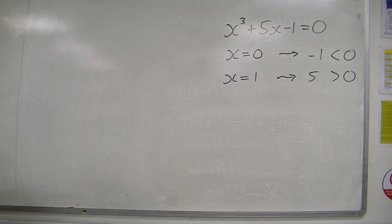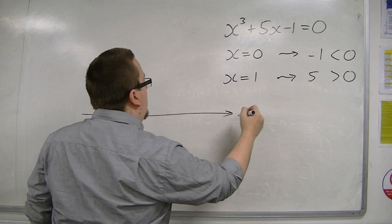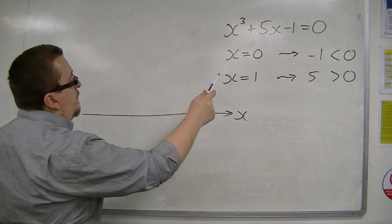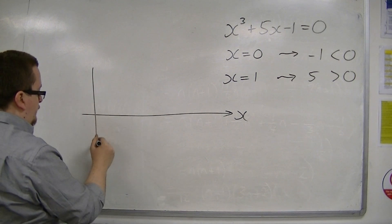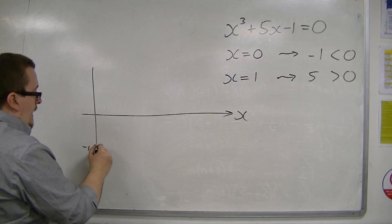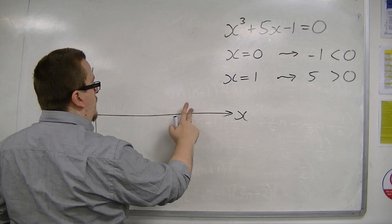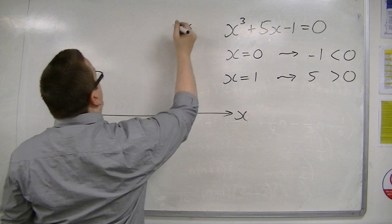Now, what must that mean? So, if this is my x-axis, then at some point the curve, when x is 0, is at minus 1. And then when I get to x is 1, I'll just put that as 1, then I'm up at 5, up here.